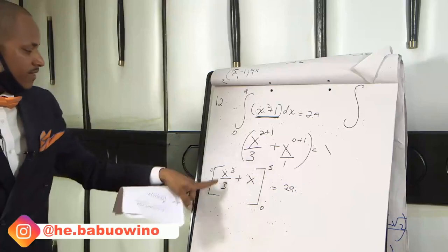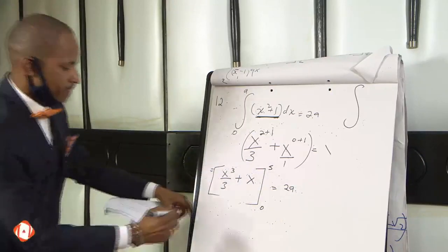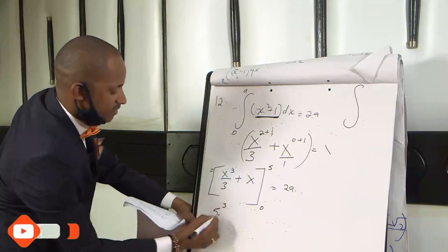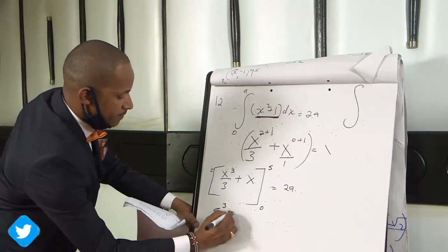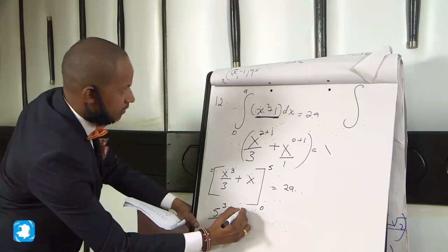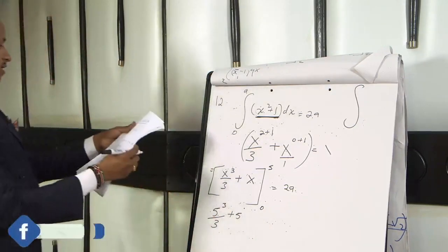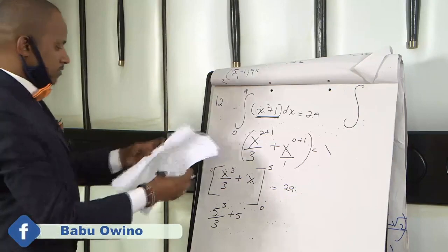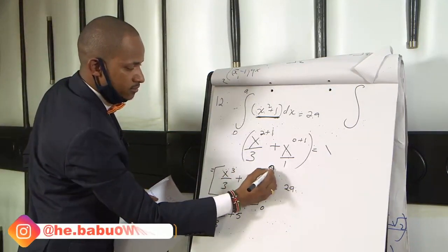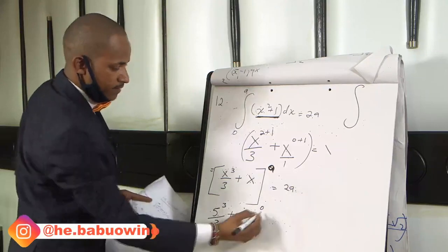Again just replace where there is x, replace with A. So this becomes A cubed, A raised to power 3 divided by 3. It is not 5, it is A. This is A.